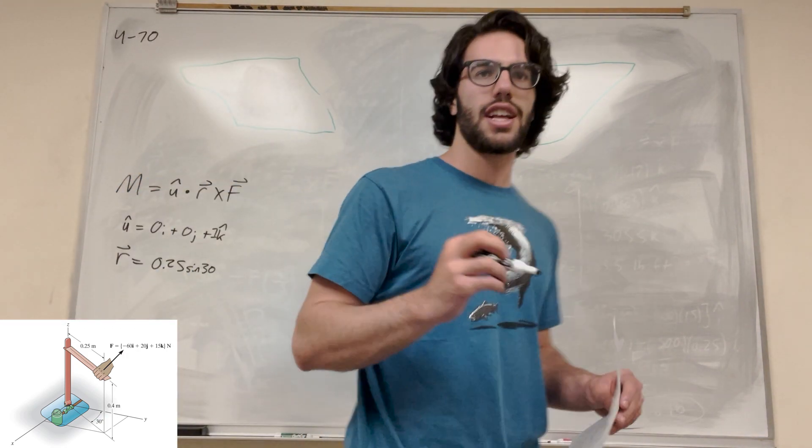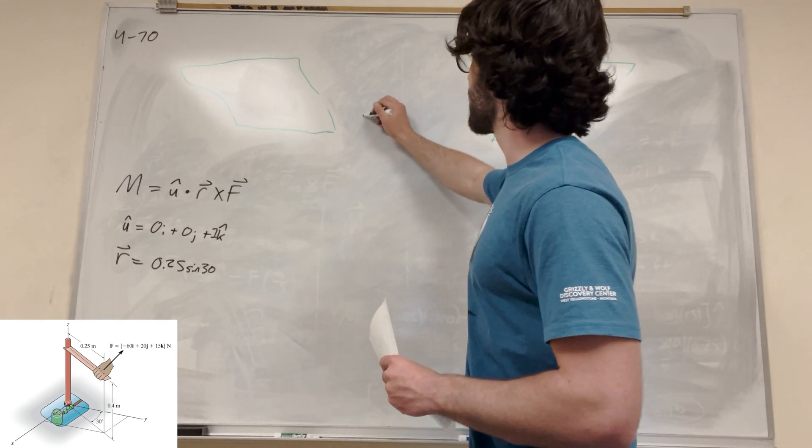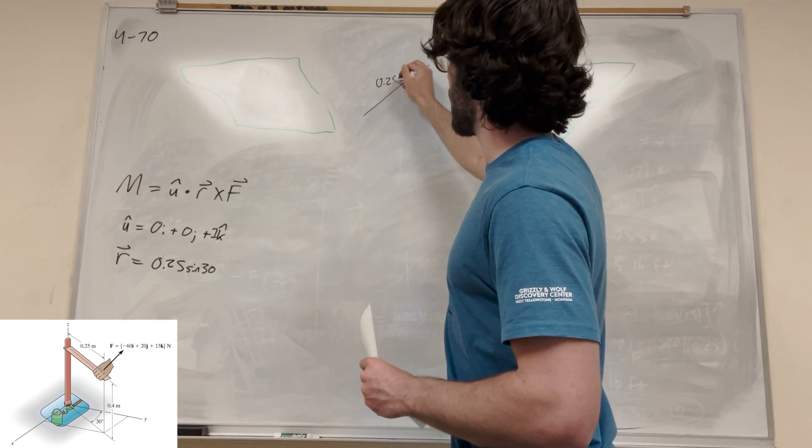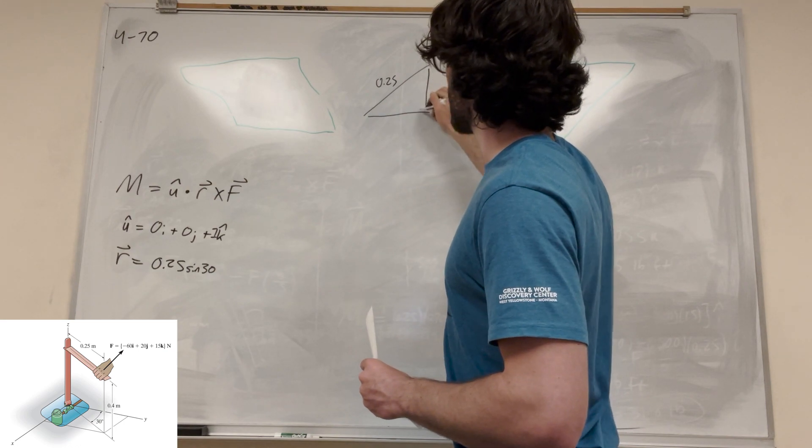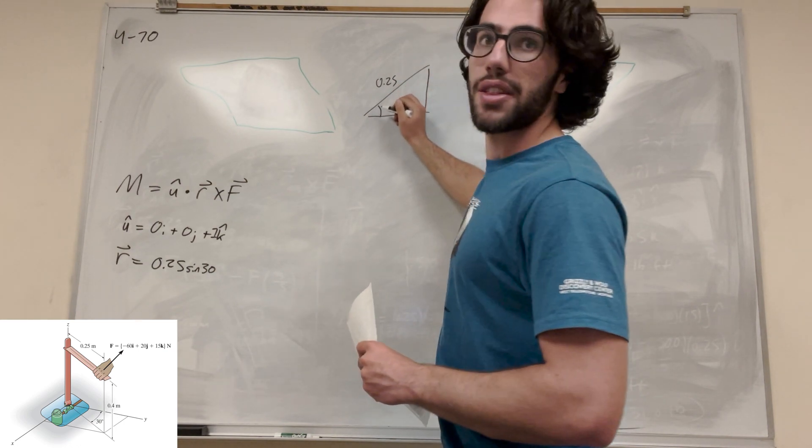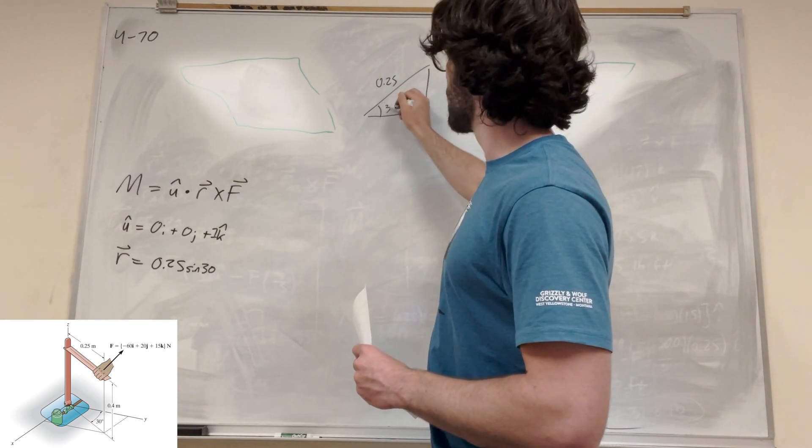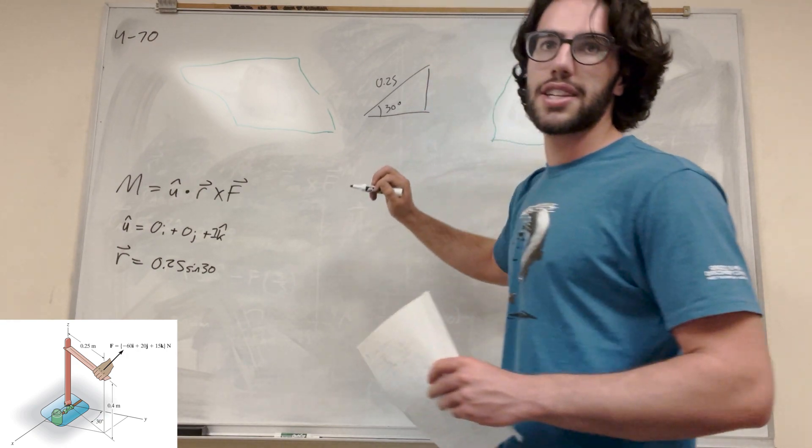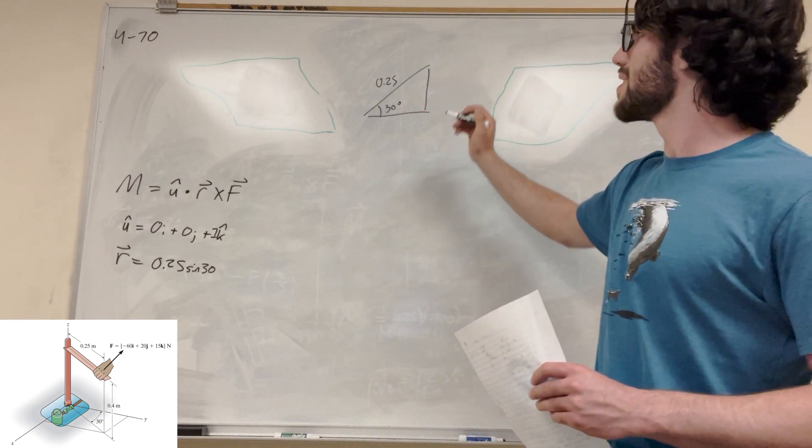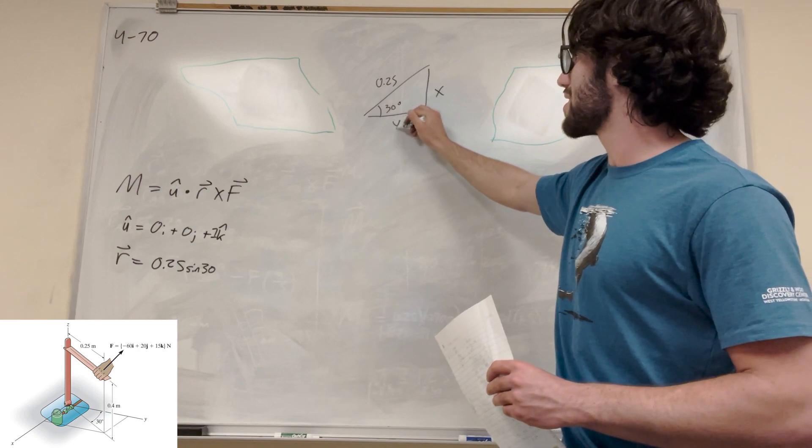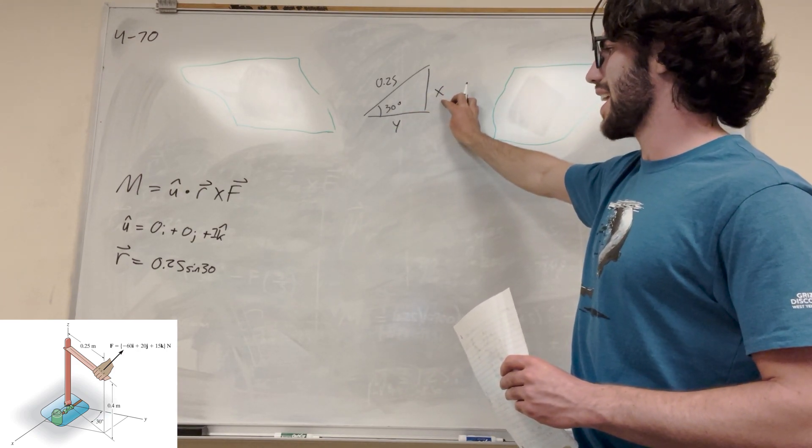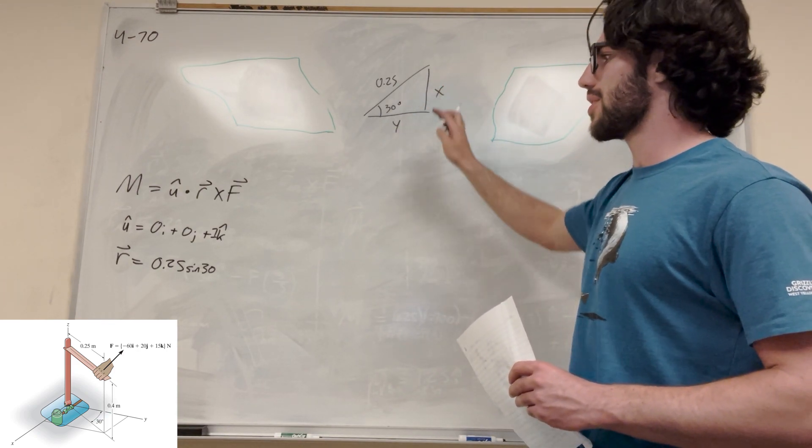I guess I can draw up what this looks like, but you basically have, this is 0.25. And this is what, 30 degrees? So in this drawing, I guess, this is x and this is y, so don't get too confused. But basically, if we're finding x, it's 0.25 sine of 30.